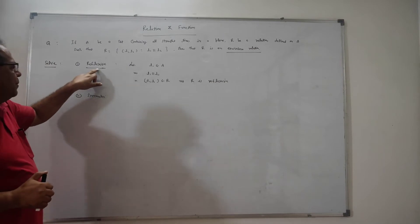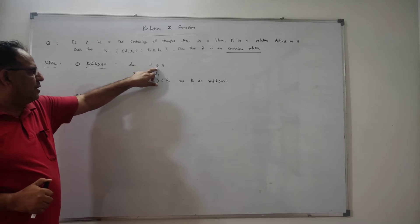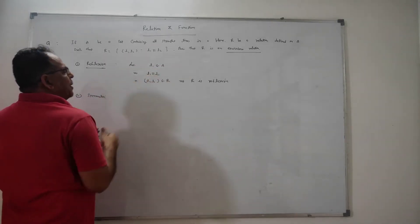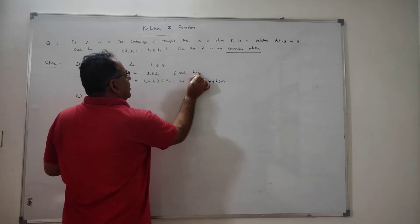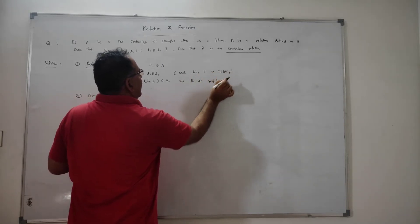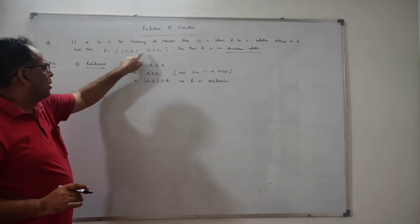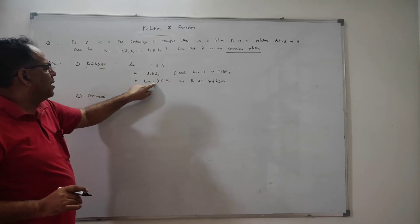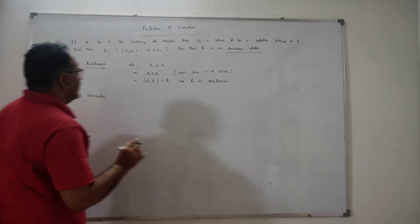The first condition is that it will be reflexive. Now we get that L1 is an element of set A. We know that each line is perpendicular to itself. If L1 is perpendicular to L1, then (L1, L1) is an element of R. This is the condition for the reflexive relation, so R becomes reflexive.